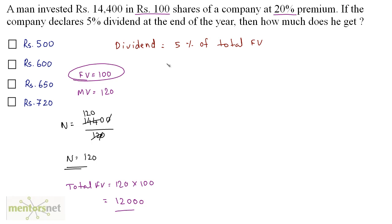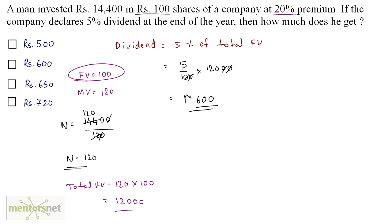Now we calculate 5% of Rs 12,000: (5/100) × 12,000 = 120 × 5 = Rs 600. So Rs 600 is the amount this man gets after the end of one year, and option B is the correct answer.